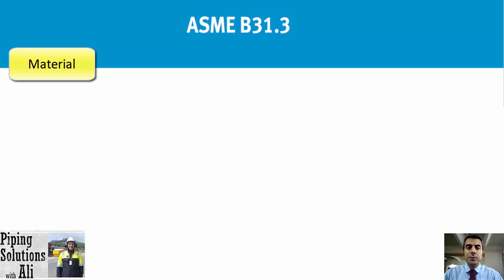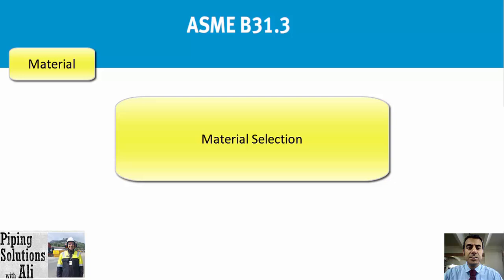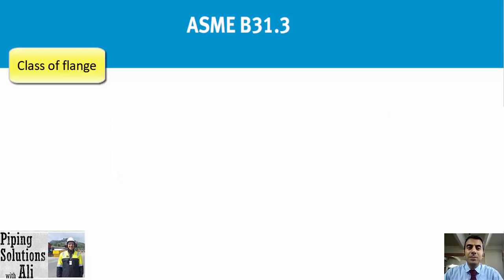The equivalent forged material to this pipe is ASTM A182 Grade F11, which is the standard specification for forged or rolled alloy steel pipe flanges, forged fittings, and valves and parts for high temperature service. Material selection will be covered in a separate course.